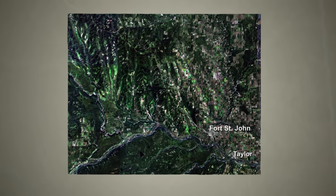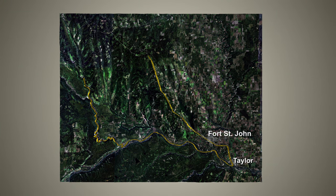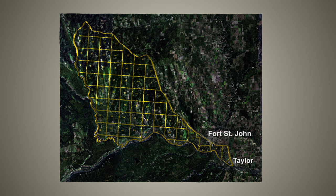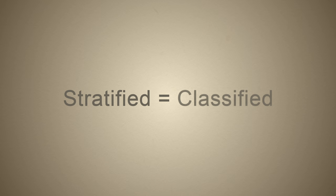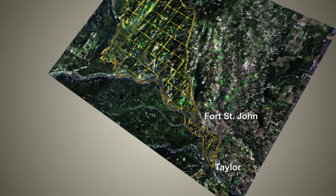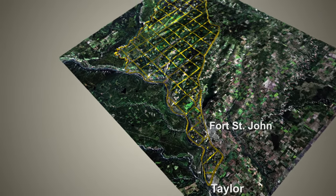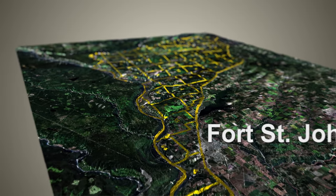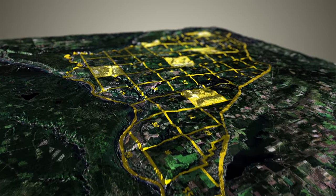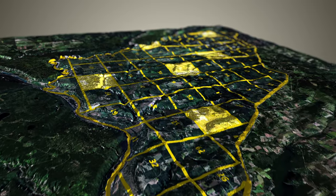Biologists divide the province into population management units. For surveys, we divide these further into smaller blocks, which are usually about 25 square kilometers. Stratified means the blocks are ranked according to how many moose we think will be there. These classes, or strata, predict which blocks will have the most or the least moose.